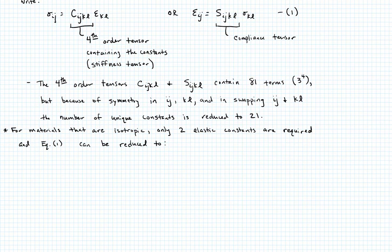In that case, equation one can be reduced to the following. We would just say that sigma_ij equals lambda epsilon_kk delta_ij plus 2mu times epsilon_ij. Let's call that equation two. You could write something similar in terms of strain as well. In this equation two, lambda and mu...